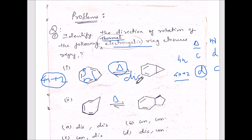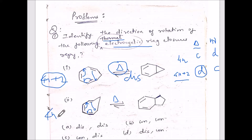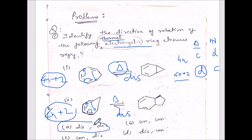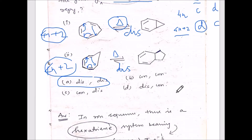For the second reaction, check whether all pi electrons are involved in cyclization. This bond shifts here, this goes here, and this attaches here — all pi electrons are involved. It is also a 4n+2 system. Under thermal condition it is again dis rotation. So option A is correct — both reactions have dis rotation.